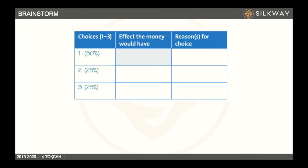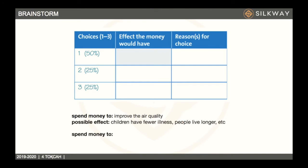Write three ways of spending the money and think about the effects the money would have. For example, if you give it to a charity to improve air quality or invest it in science, a possible effect could be: children will have fewer illnesses, people will live longer, and less money will be needed from the government. The reason for this choice might be that you love your city and it has a problem with air quality.